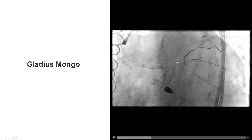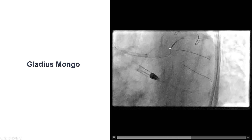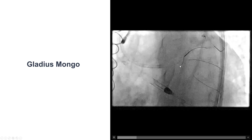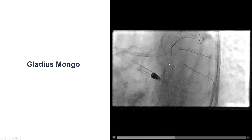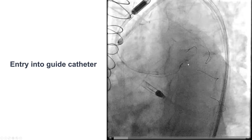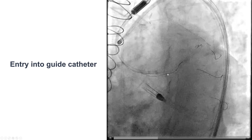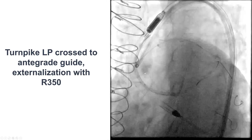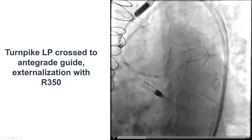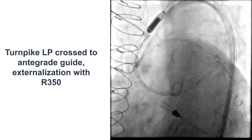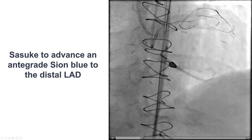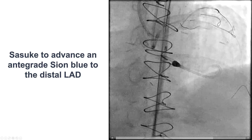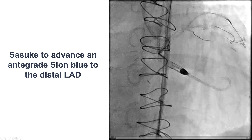This is very important because if it crosses extraplaque and you balloon, there is a possibility of causing occlusion of the circumflex when stents are placed. We were eventually able to switch to a Gladius Mongo wire that was then advanced into the antegrade guide catheter. We advanced the Turnpike LP and externalized an RG3 guide wire, and then used the Sasuke dual-lumen microcatheter to advance an antegrade workhorse wire to the distal LAD.